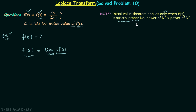Strictly proper means the power of the numerator should be less than the power of the denominator. But in our case, the power of the numerator is the same as the power of the denominator. So we cannot directly apply the initial value theorem because F(s) is improper.